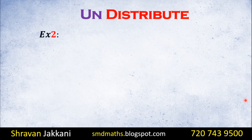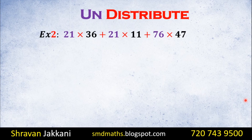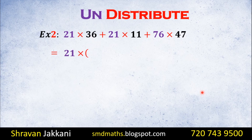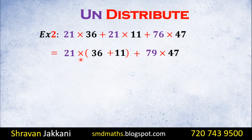You can also understand that this type of number takes 6 as common. We showed you a particular problem — an engineering-style problem. We found out the value of 21 as common. Now we found out that 21 was common. We will write 21 times, with 36 plus 11 in the bracket. So 21 into 36 plus 11: 30 plus 10 is 40 and 6 plus 1 is 47.